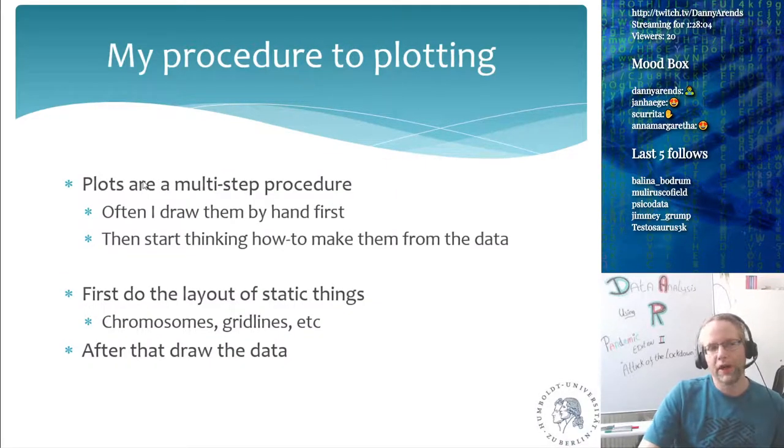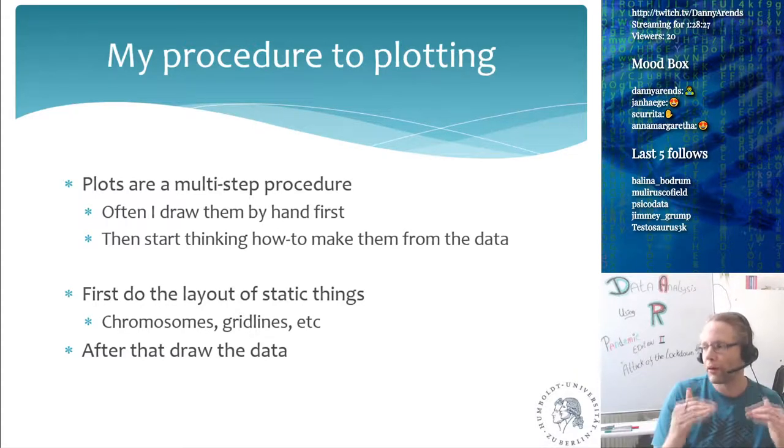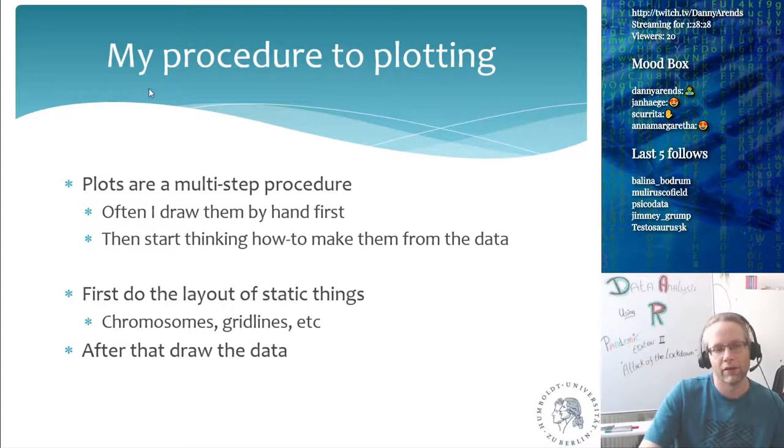So, my procedure to plotting, plots are often a multi-step procedure. I usually draw them very quickly by hand, very coarsely, and then I start thinking of how to make the plot that I want to make with the data that I have. And the way that I do it is I first do the static kind of things, so the layout, like chromosomes or grid lines, and then afterwards I take my data and I plot my data kind of row by row onto the plot that I have. So that's kind of my standard procedure for plotting.